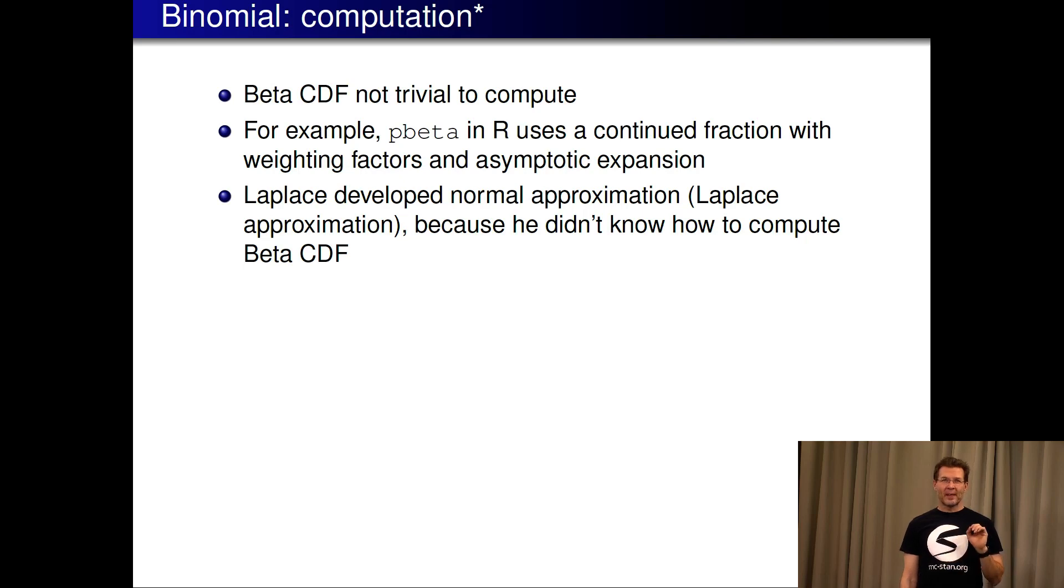R uses continued fraction with weighting factors and asymptotic expansion. Laplace did not know this, and this also needs some computation. Laplace, when he used binomial model, he developed normal approximation, also known as Laplace approximation, in order to be able to compute these cumulative density function values and posterior probabilities.